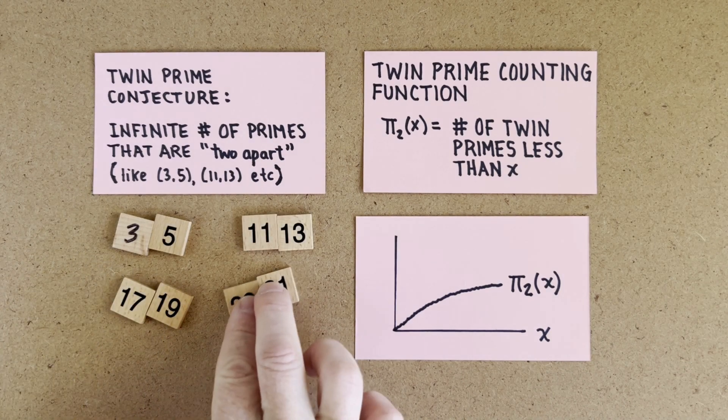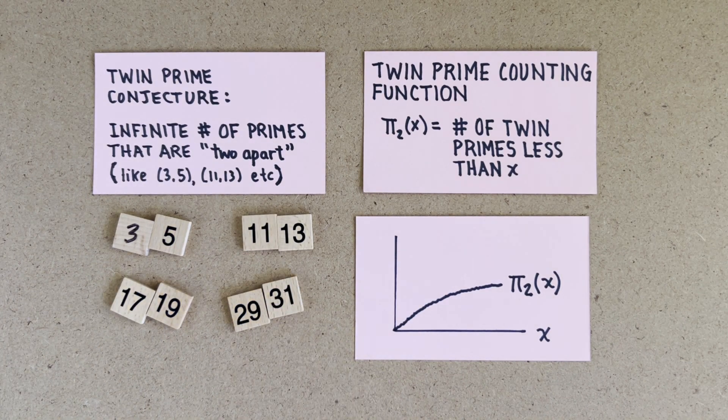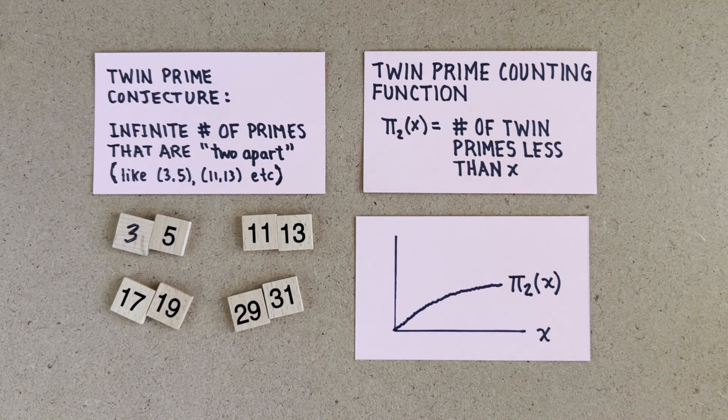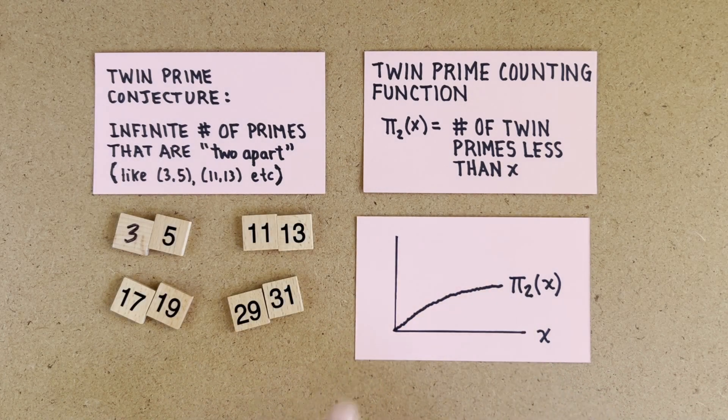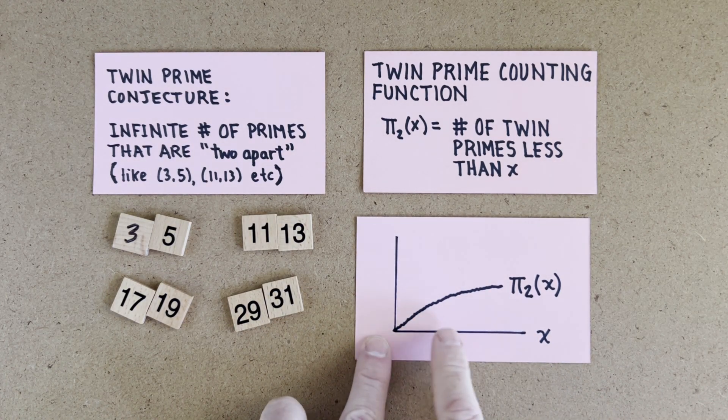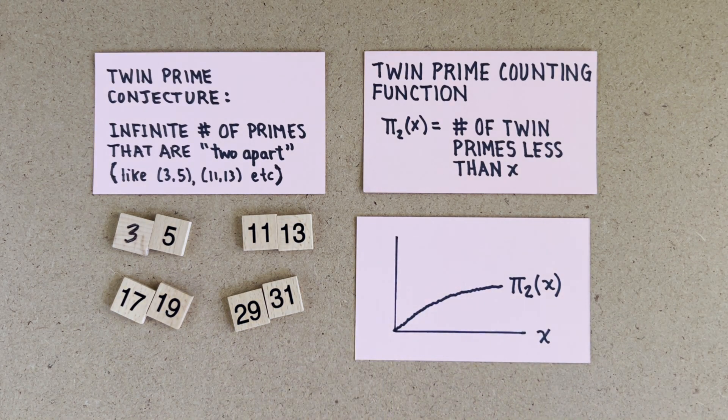The twin prime conjecture says there's an infinite number of primes that are 2 apart. Nobody knows if this is true. It's possible there's some final pair of twin primes out there. Empirically, you can plot how many twin primes there are from 1 to x, for any x. It flattens out over time as the twin primes become more and more rare.